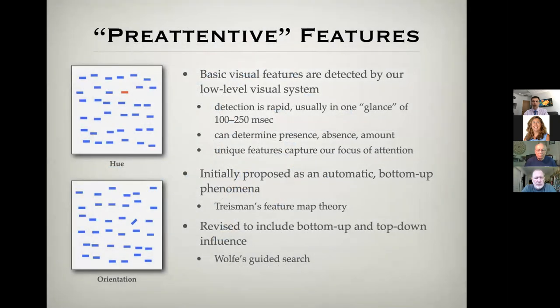Let me talk about psychophysics vision and how we integrate it into our visualizations. These were initially known as pre-attentive features because it was thought their detection preceded attention. We now know they live on a spectrum from pre-attentive to attentive, but the term is still used because it gives an intuitive feel. There are a large number of basic visual features detected by our low-level cognitive visual system. Detection is rapid—usually 100 to 250 milliseconds. These are called one-glance systems because in that period the visual system doesn't have enough time to choose to look somewhere else.